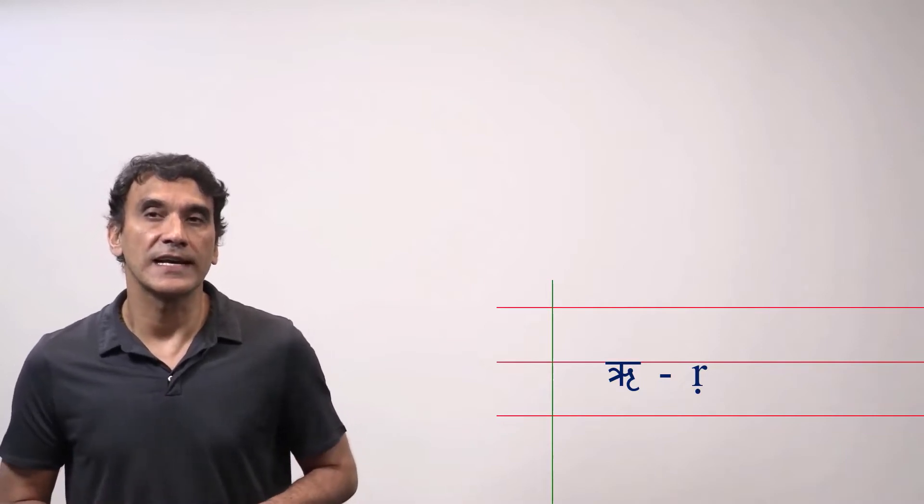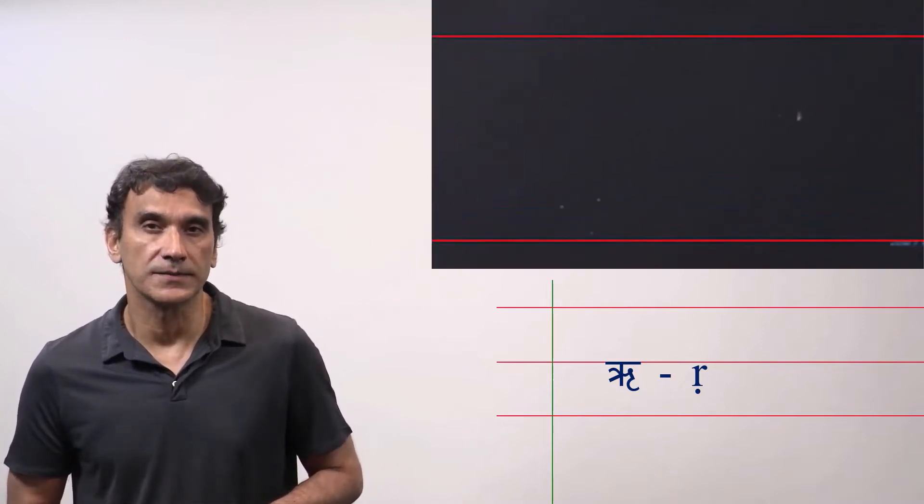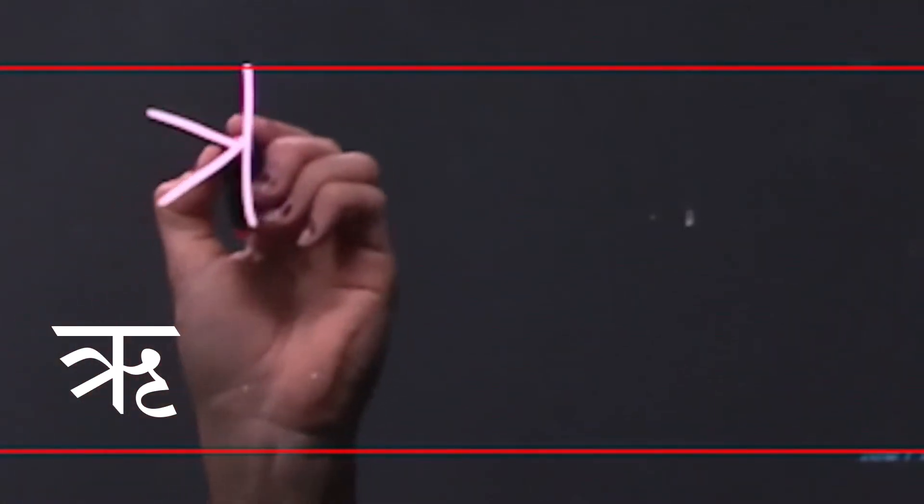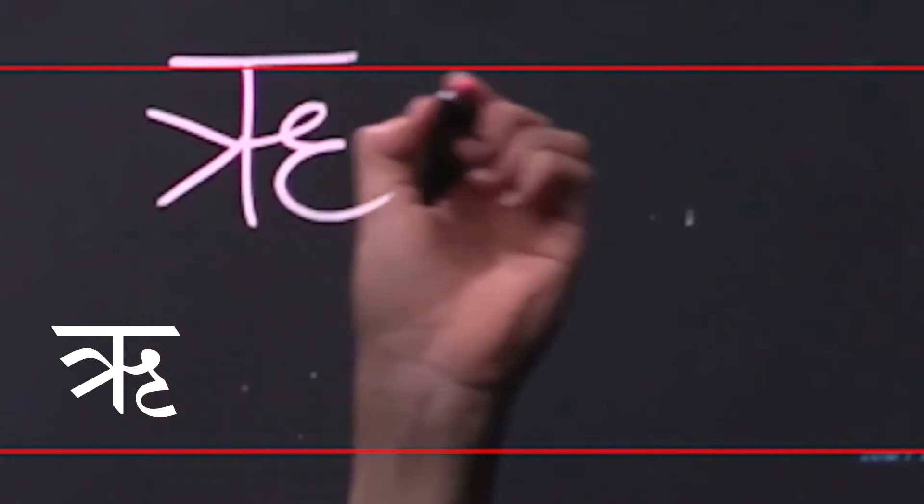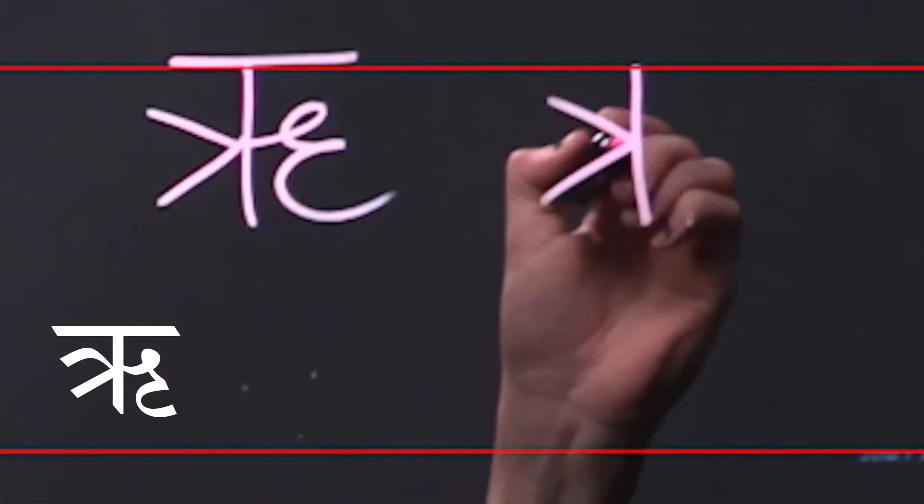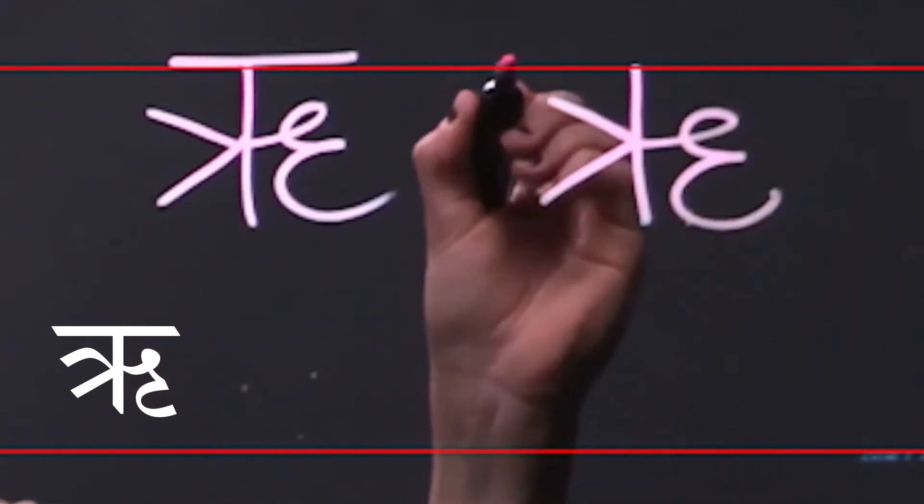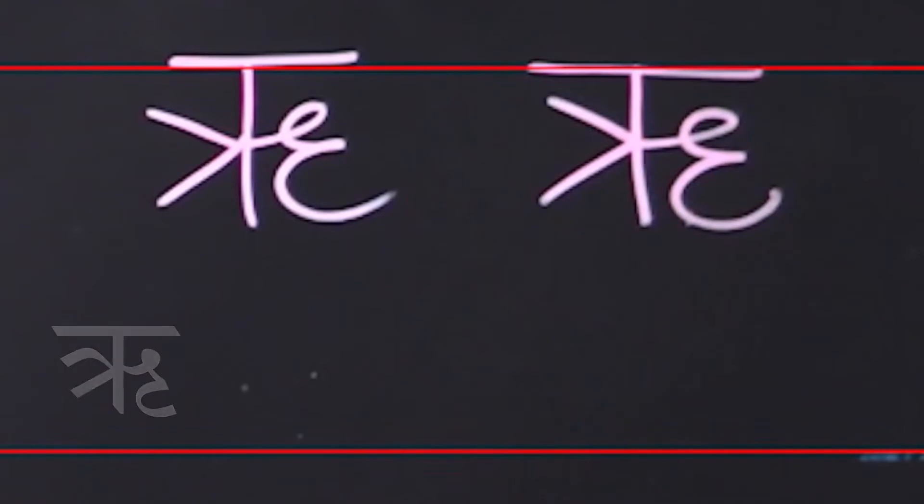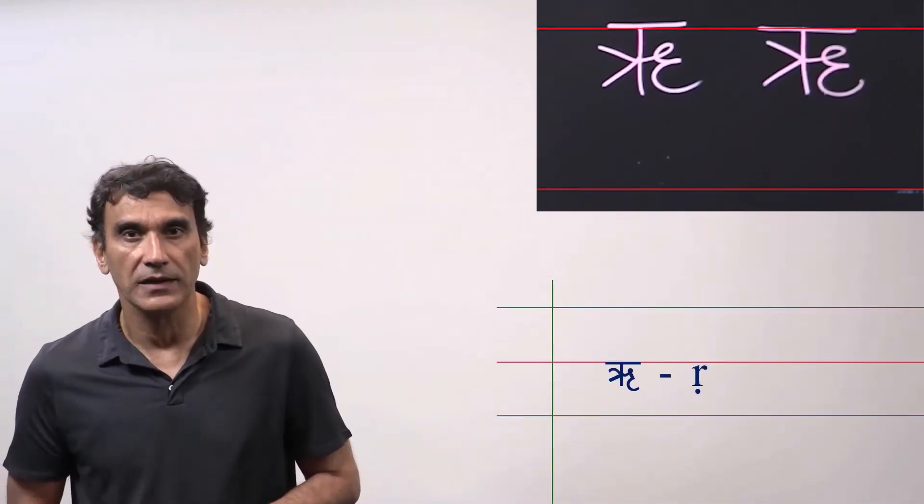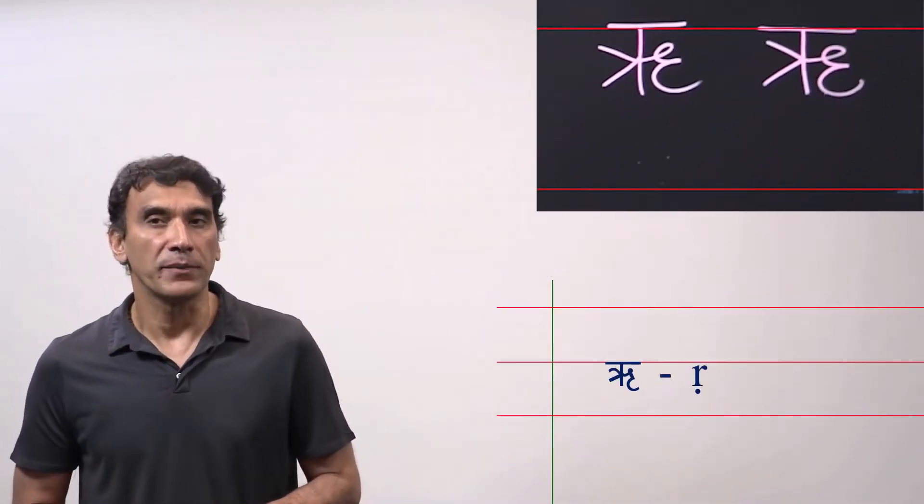It is transliterated as R with a dot under it. This is how it is written. It looks a bit complicated to write but keep in mind it will come very rarely in this form in Hindi. It mainly comes in a diacritic form which is much simpler. We will take the diacritic form in a later video.